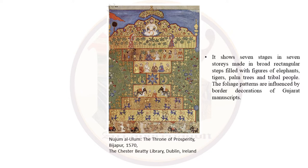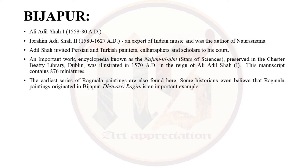The palm trees, animals, men and women all belong to the Deccan tradition. There is lavish use of golden colour, some flowering plants and arabesques — dome-like architectural structures seen on top of the throne — all from the Persian tradition. The earliest series of Ragmala paintings are also found in Bijapur, and some historians believe Ragmala paintings actually originated in Bijapur.